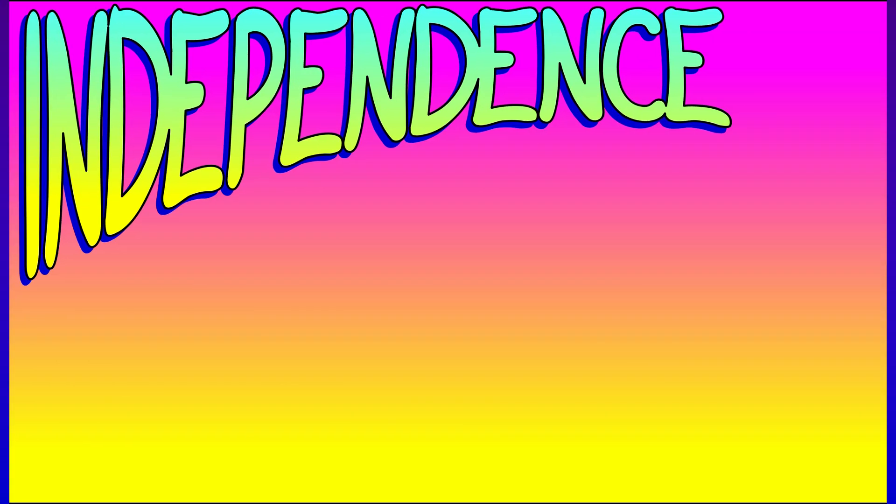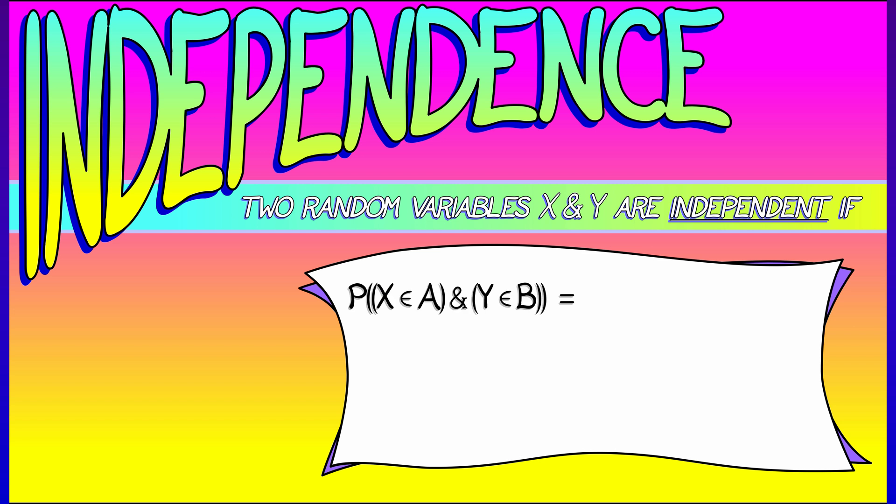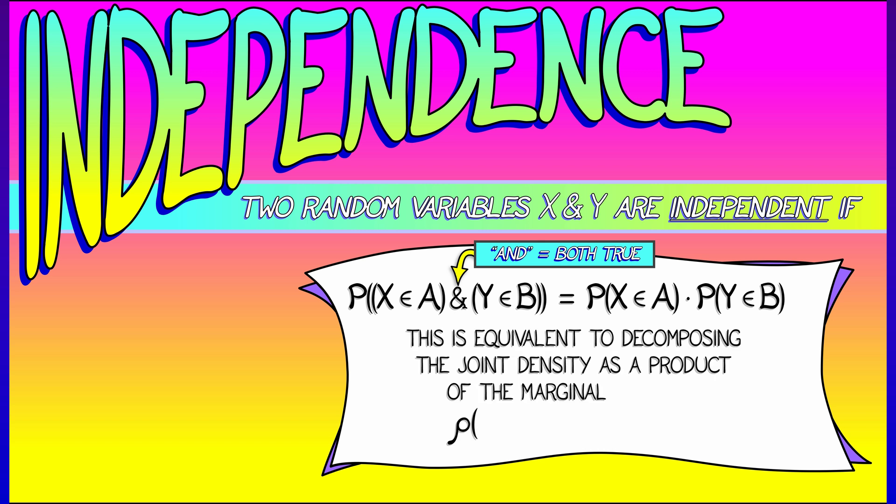We say that two random variables, x and y, are independent if the probability that x lies in a subset A and y lies in a subset B is really the product of the probability that x lies in A and y lies in B. This has to be true for all subsets A and B, and this is equivalent to decomposing the joint density as a product of the marginals. That is, the joint density is some function of x times some function of y.